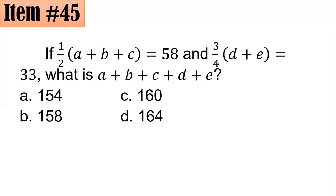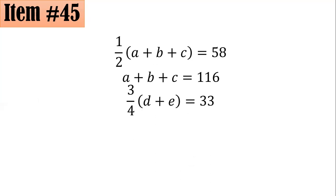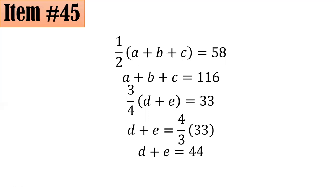We don't need specific values. For the first equation, multiply both sides by 2 to clear fractions: A plus B plus C equals 58 times 2, or 116. For the second equation, multiply both sides by 4/3 to get D plus E: that's 4/3 of 33. Since 33 divided by 3 is 11, and 4 times 11 is 44, D plus E equals 44.